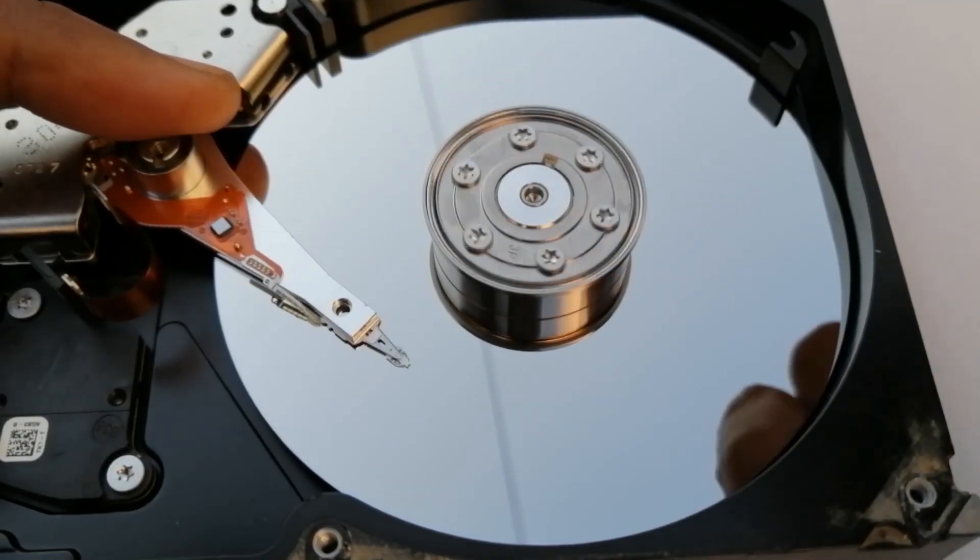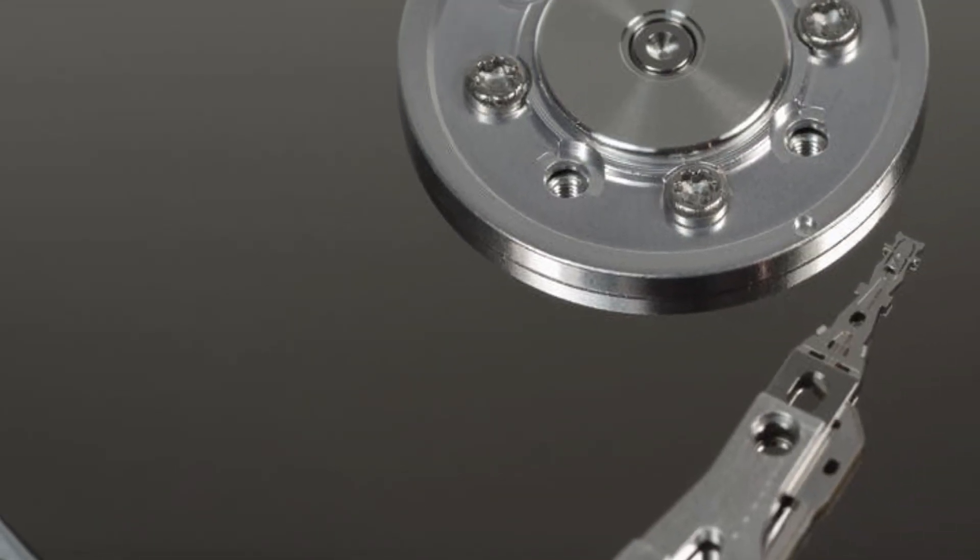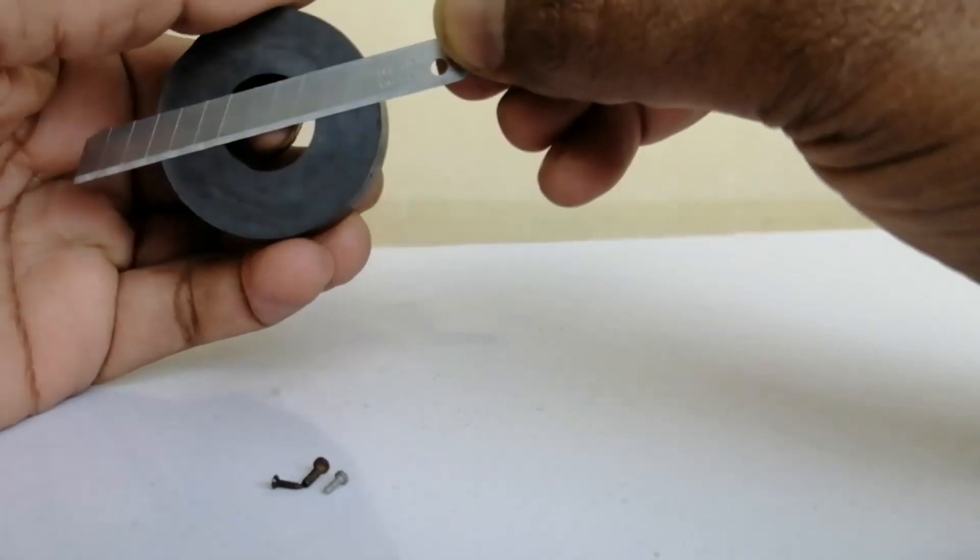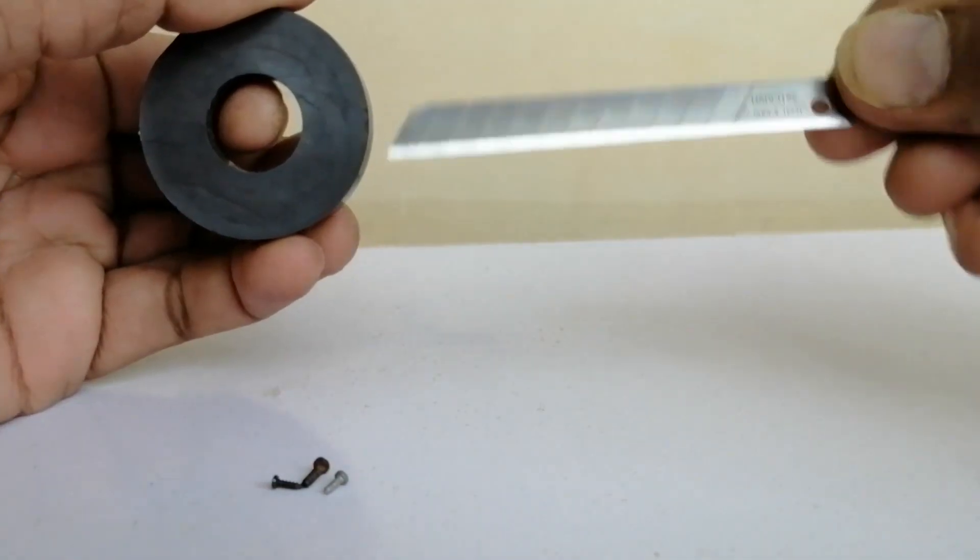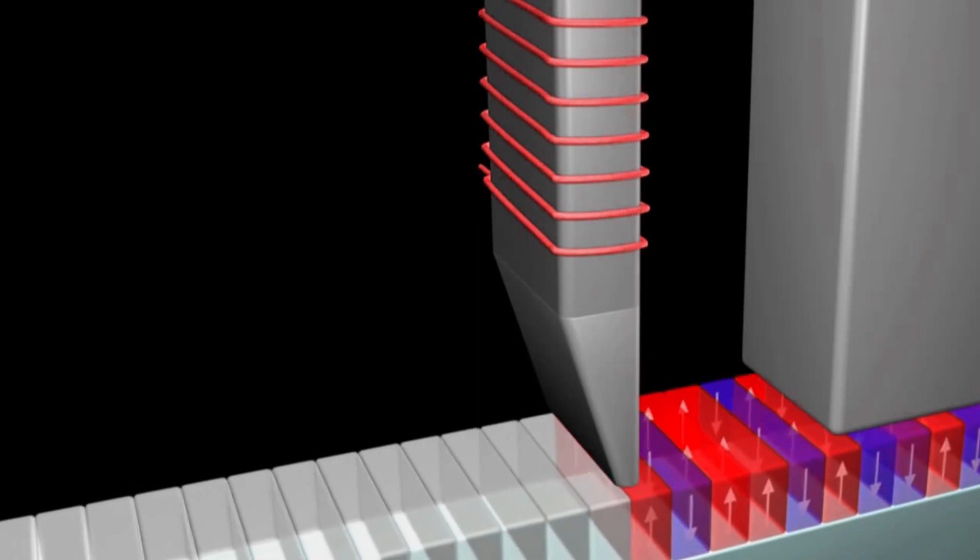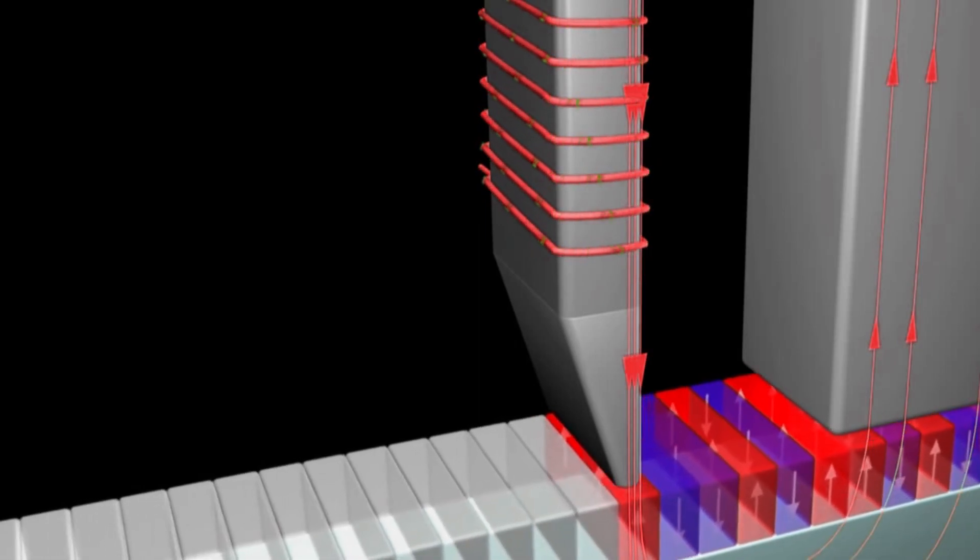In a hard disk magnets do not physically rotate to store data. Instead, a magnetic material is used, which is permanently magnetized by a magnetic field. Just like if an iron is rubbed with a magnet, it also becomes a magnet. Similarly, when the head magnetizes the hard disk with the help of its magnetic field, it saves the data forever.